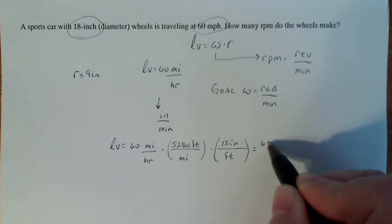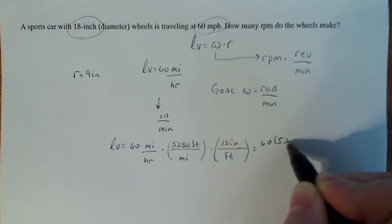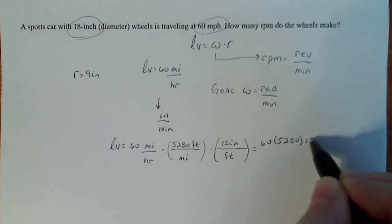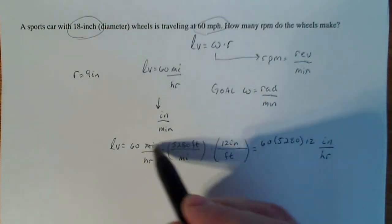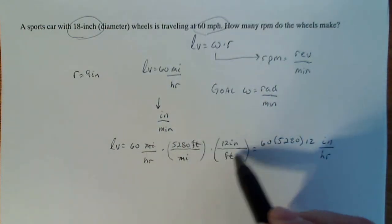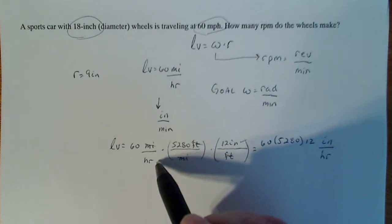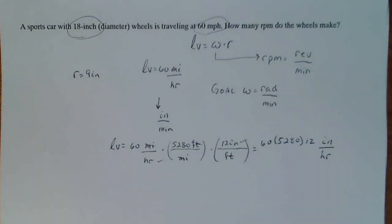So what I'm getting here is 60 times 5,280 times 12 inches per hour because my miles cancel, my feet cancel and I'm left with inches per hour. So let's see what that number is, take out my trusty calculator.